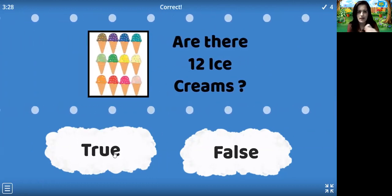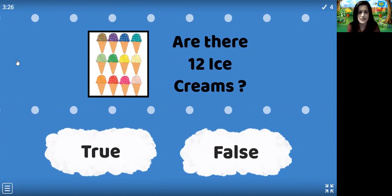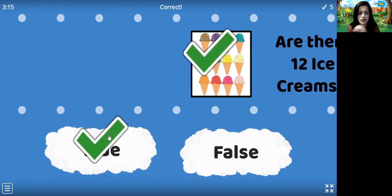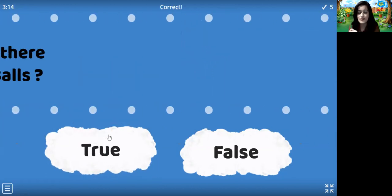Are there 12 ice creams? 1, 2, 3, 4, 5, 6, 7, 8, 9, 10, 11, 12. Yes! We got 12 ice creams.